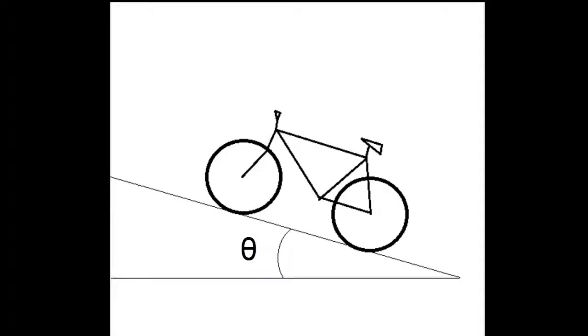We can model the various components of the forces as follows. The weight w, which is equal to mg, has a component parallel to the road w parallel, which is equal to mg sin theta. m is the mass of both the rider and bicycle, and g is the constant of gravity.